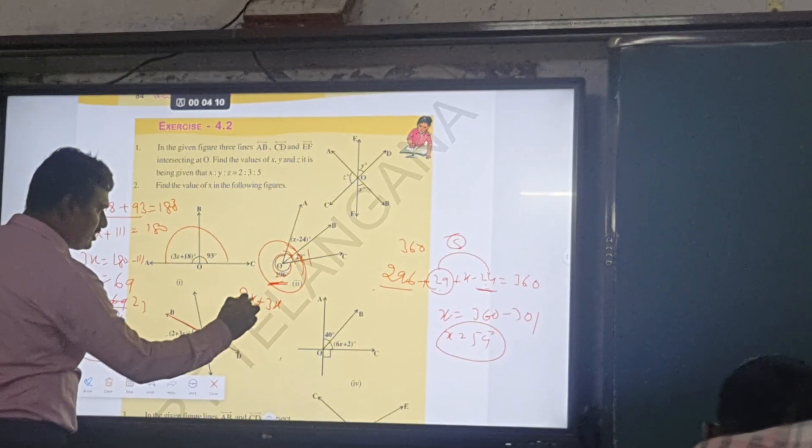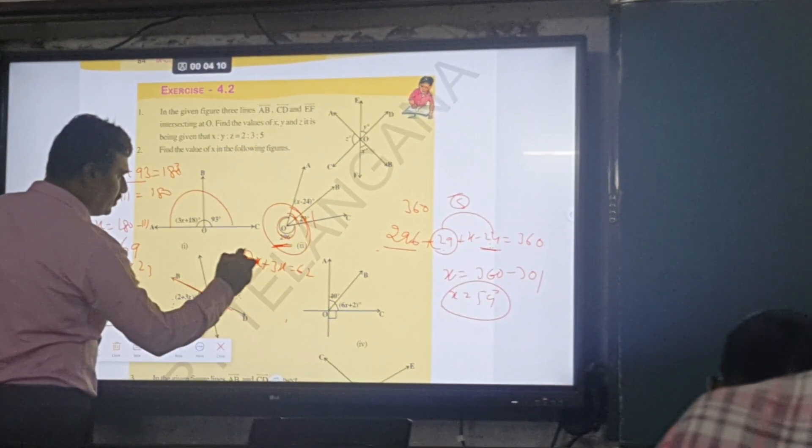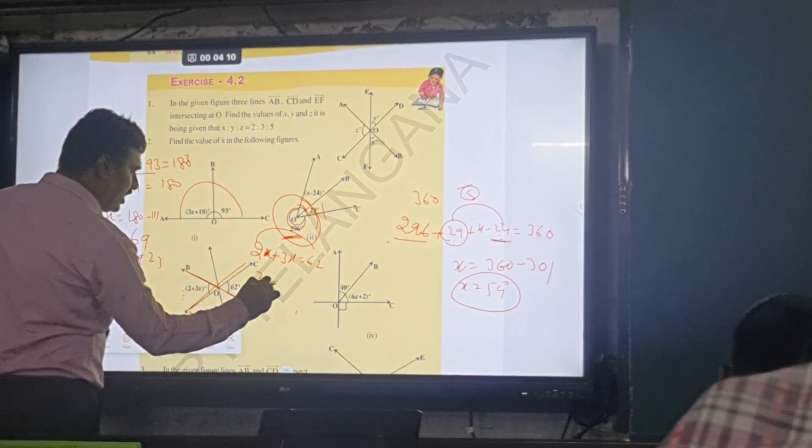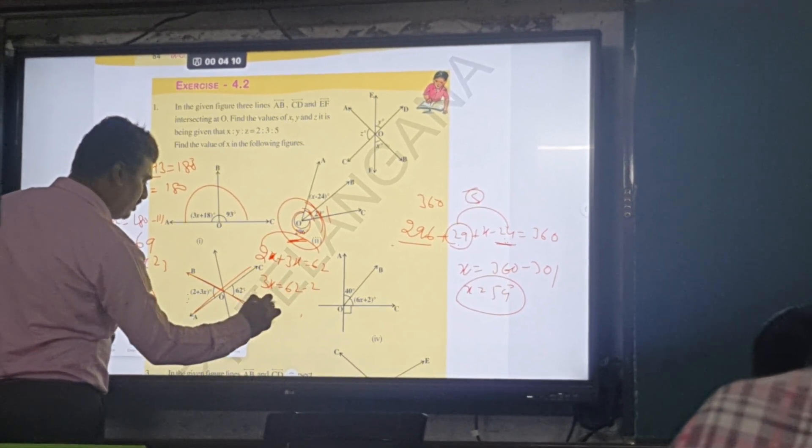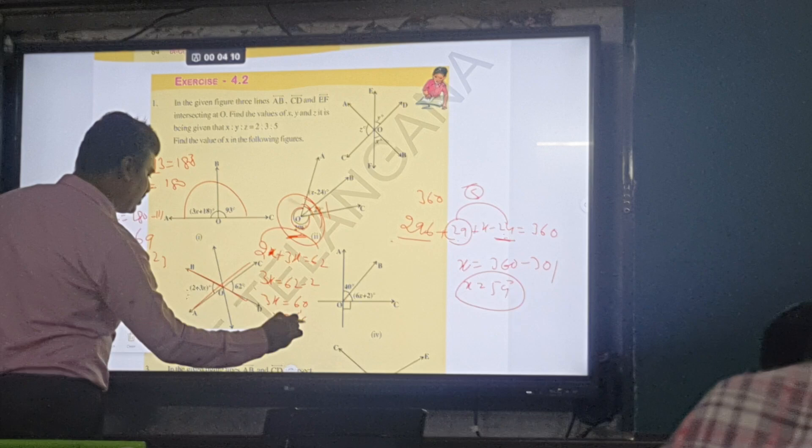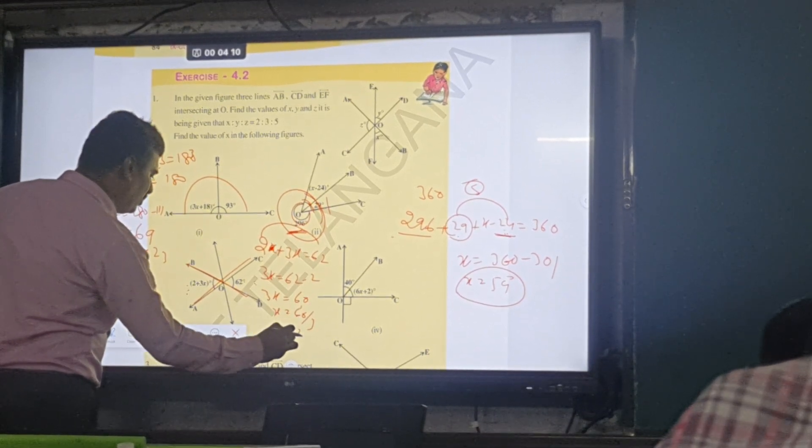2x plus 3x equals 62. 3x equals 64 minus 2. 3x equals 60. x equals 60 by 3. x equals 20.